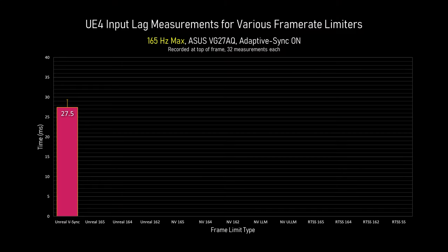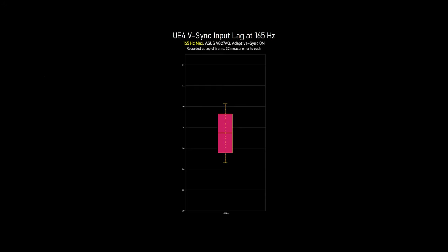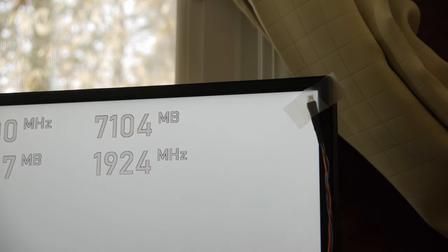With only VSync enabled, the graphics driver first allows UE4 to fill the swap chain, but then stalls Unreal's rendering thread until the front and back buffers are flipped for the next frame. This causes all keyboard and mouse inputs to pile up in a queue, which is where the average lag of 27.5 milliseconds comes from. A box and whisker plot shows the spread of the 32 measurements — it looks like a uniform distribution between 24.5 and 30.5ms, a difference of 6ms, which is one frame at 165Hz. Depending on when the microcontroller sends the key press, I may get lucky and send it right before Unreal presents the frame, or I may just miss that and have to wait a full display cycle.